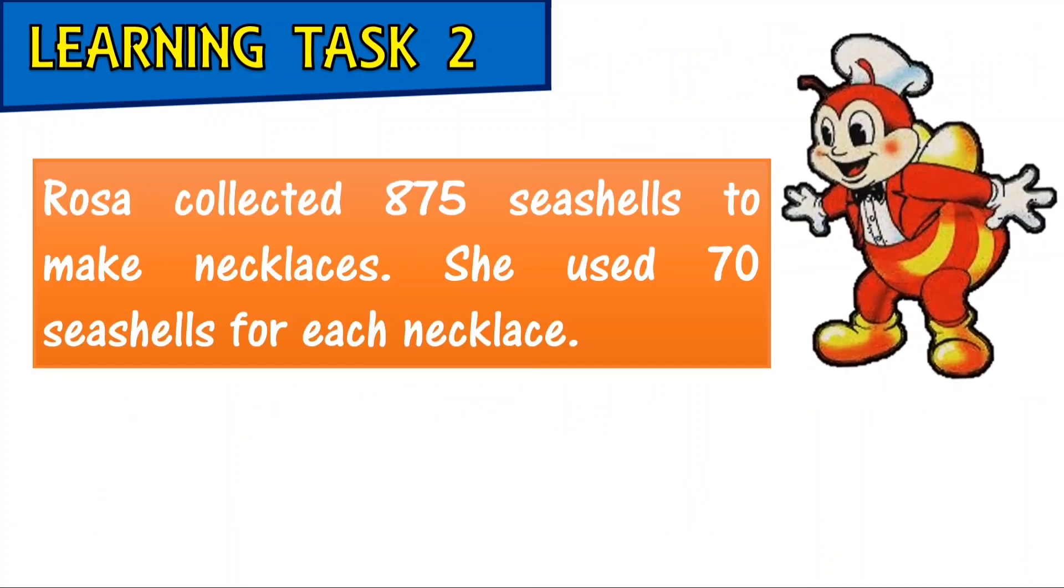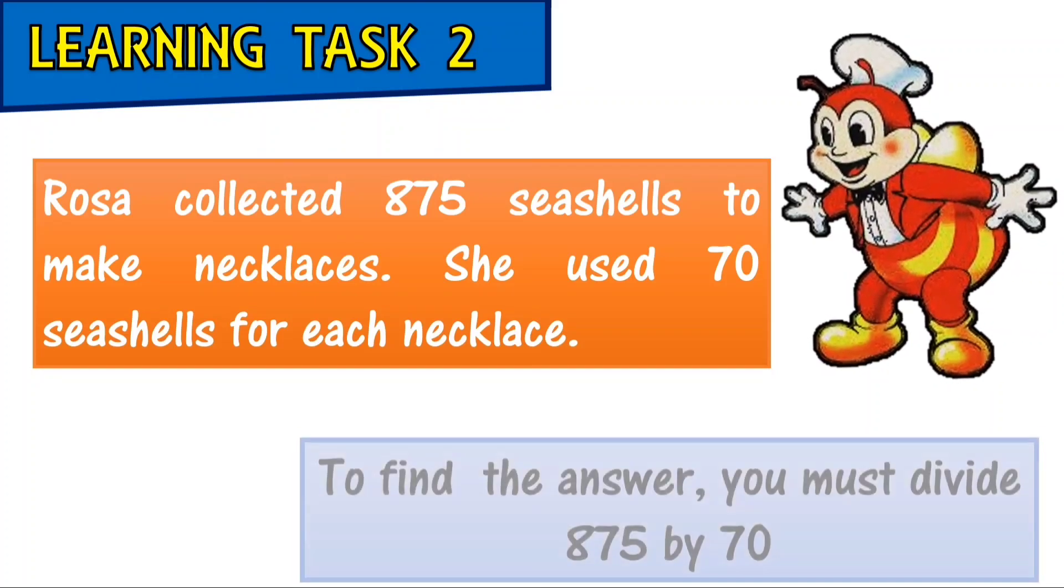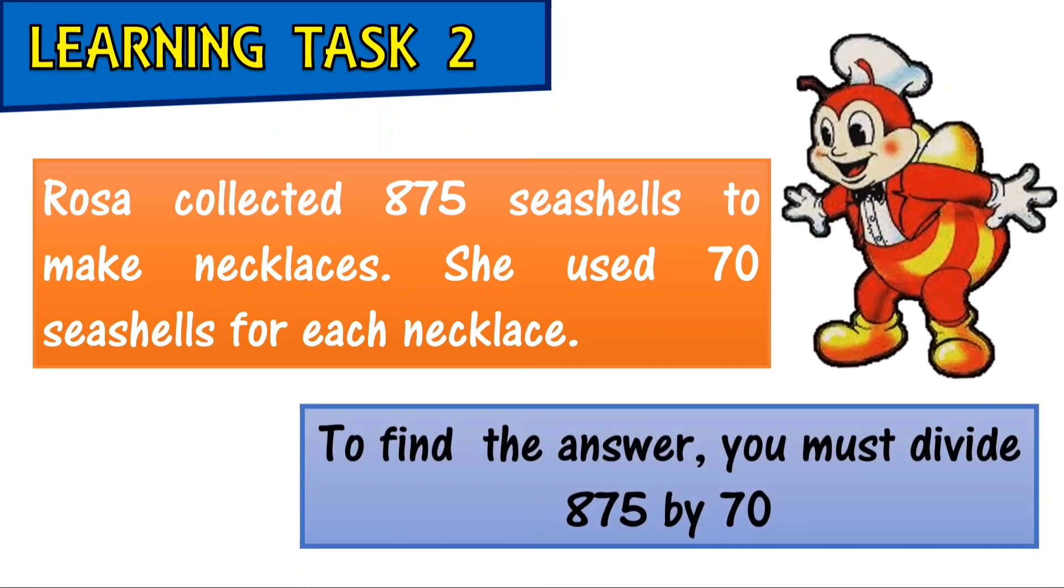Let us analyze the example problem. Rosa collected 875 seashells to make necklaces. She used 17 seashells for each necklace. To find the answer, you must divide 875 by 70.